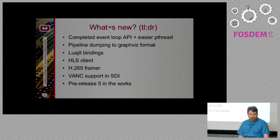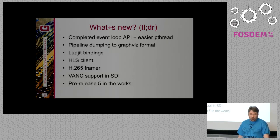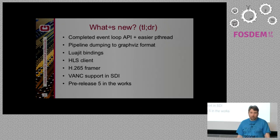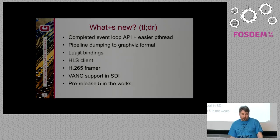For those who were there in previous years, what's new? We've had a lot of work on the event loop API to make it more complete. You no longer need to call the event loop directly from your program, and it's easier to launch pthreads, pthread workers. We have a nice utility to dump pipelines in GraphViz format — some of the slides you'll see later have been automatically generated from U-Pipe using GraphViz. And the Lua JIT bindings I talked about last year are finally merged in.